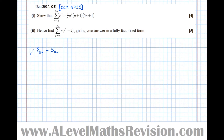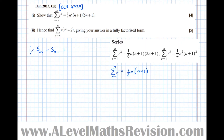So that's all the terms from 1 to 2n, take away all the terms from 1 to n minus 1. Thinking back to our formulae from before — remember this one's not given but these two are — we can just substitute 2n into the formula and n minus 1 into the formula to give the closed form that we want.